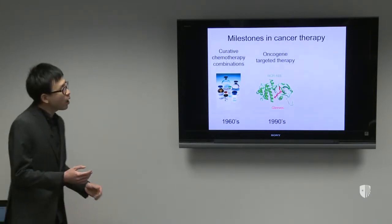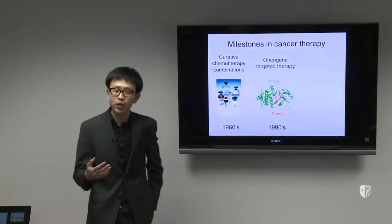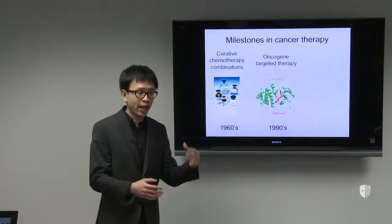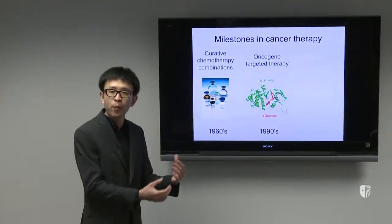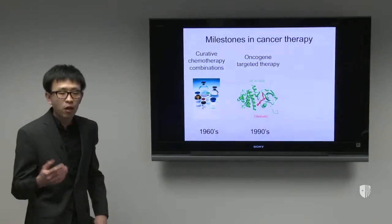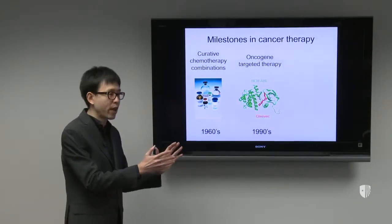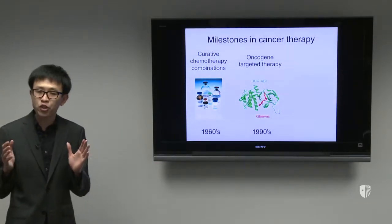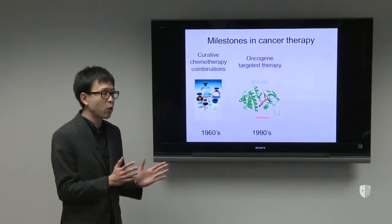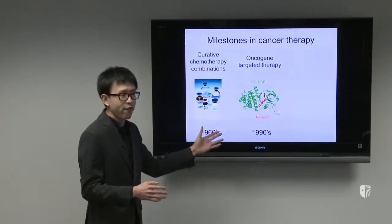Later we noticed that cancer cells can be driven by mutation of genes — especially oncogene mutations that drive uncontrolled proliferation. So people thought: if we can identify a potent oncogene in some type of cancer, and develop a drug to target that mutated oncogene, maybe we can slow down the disease. This is what we call oncogene-targeted therapy.